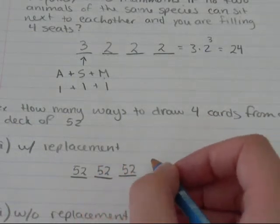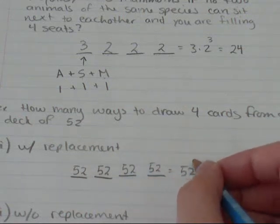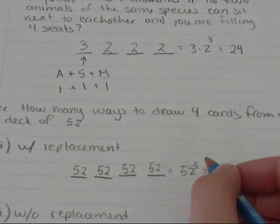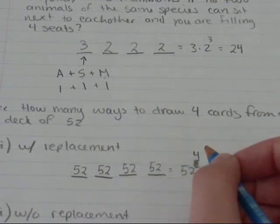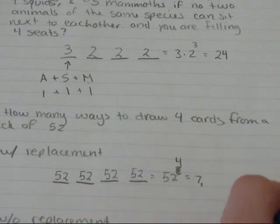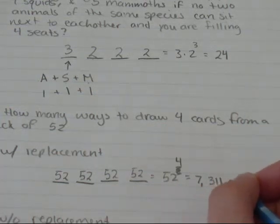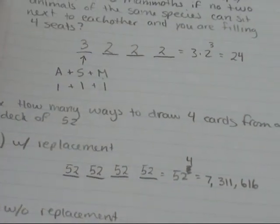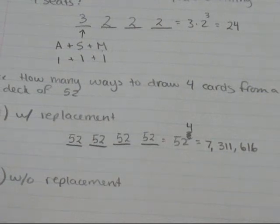Then again, I have 52, 52 again. So that gives me 52 to the fourth. That gives me 7,311,616 ways that I can draw four cards from a standard deck with replacement.